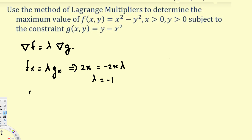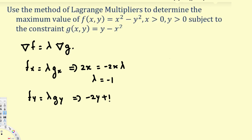Now we do the same thing for y. We take the partial derivative of f with respect to y, and also the partial derivative of g with respect to y, then multiply the g partial derivative by lambda. Taking the partial derivative with respect to y gives negative 2y, since x is a constant and becomes 0. The g partial with respect to y gives 1.